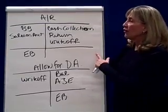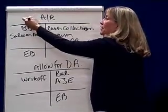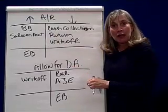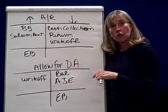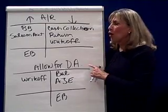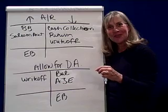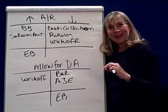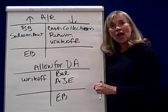We know since it's an asset account, it's increased by debits and decreased by credits. It has a beginning balance — that's a debit balance — representing the customers who owe you money at the beginning of the year. Whenever we make a sale, the entry is debit accounts receivable, credit sales, for whatever the sales are on account.